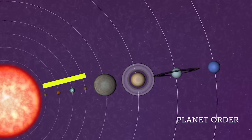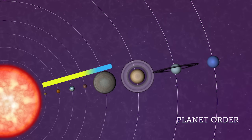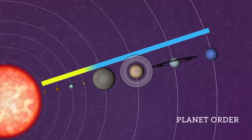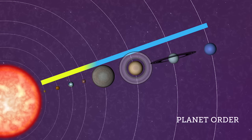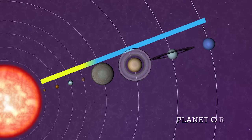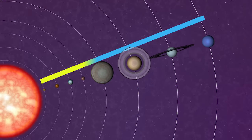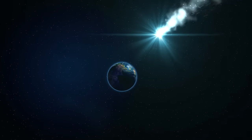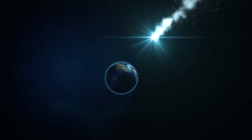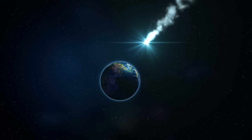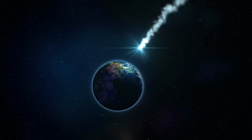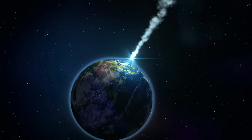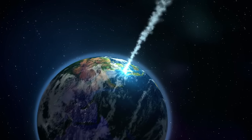The gas giants — Jupiter, Saturn, Uranus, and Neptune — formed in the cooler outer region of the solar system. The solar system continued to evolve even after its initial formation. Large asteroids slammed into planets, and the planets themselves differentiated into layers as they slowly cooled.